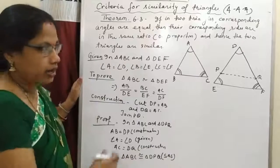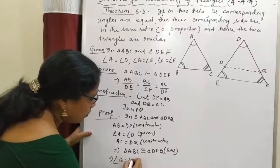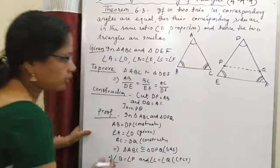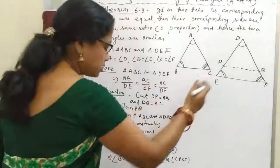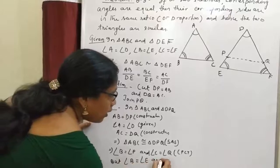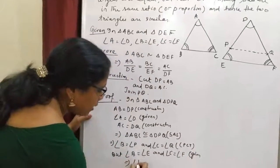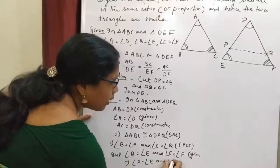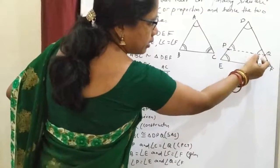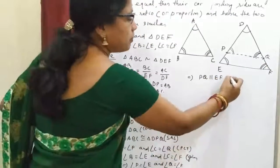If these two triangles are congruent, then their corresponding parts are equal. So this implies angle B is equal to angle P and angle C is equal to angle Q by CPCT. But it is given that angle B is equal to angle E and angle C is equal to angle F.